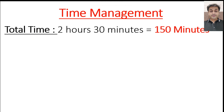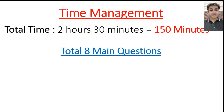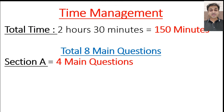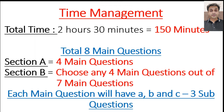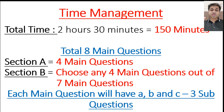Number one: how much time do you have? You got a total of two and a half hours, that is 150 minutes, to write your entire paper. You've got a total of eight questions that you need to attempt. Out of which four are compulsory — that is Section A. And the remaining four, you have a choice. Section B will have seven questions, out of which you need to choose any four. So a total of eight questions is what you need to attempt. Each main question will have three sub-questions: A, B, and C. So altogether, eight into three — 24 questions is what you need to attempt in your complete maths paper.